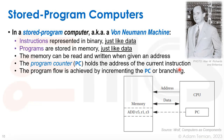Stored program computers, or von Neumann machines, have instructions represented in binary just like data is represented in binary. Programs are stored in memory just like data. Memory can be read and written when given an address. The CPU has something called the program counter, which points at the address where the current instruction is held. We can go to different places by incrementing the program counter to the next instruction, or by branching and moving the program counter to a different address. That is a von Neumann machine.